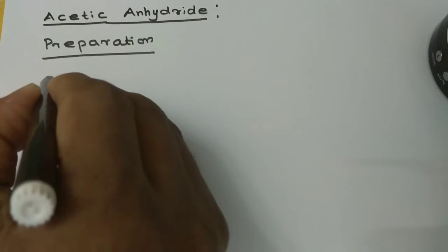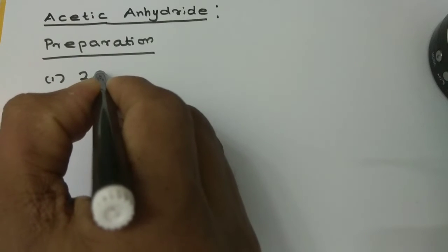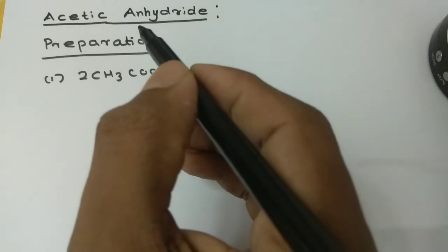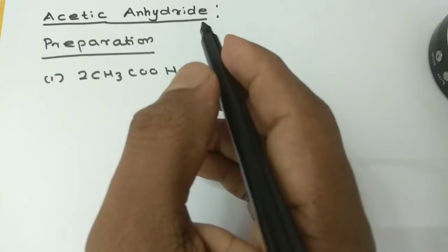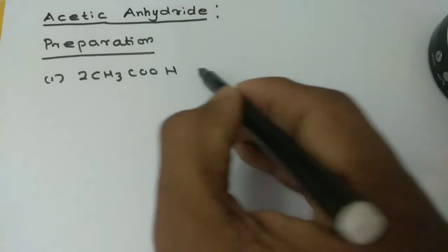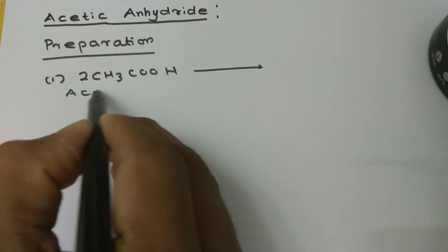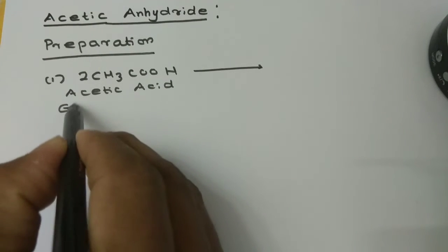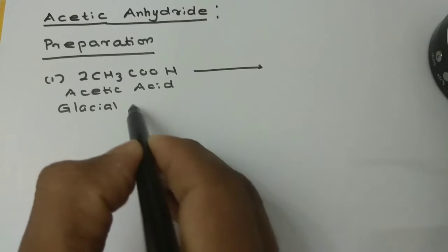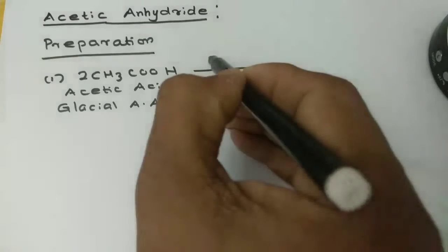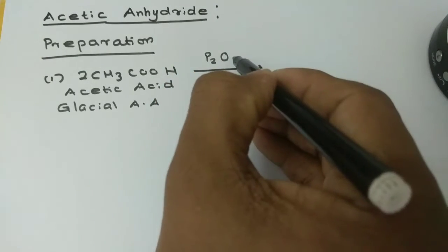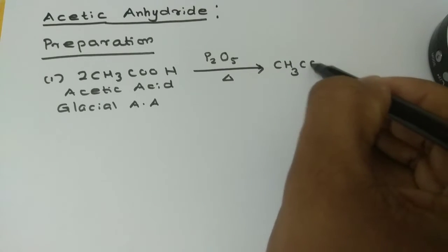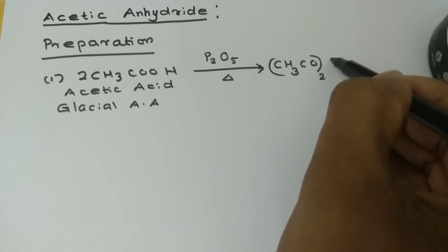First method: we take acetic acid — 2CH₃COOH. Pure acetic acid without water is called Glacial Acetic Acid.